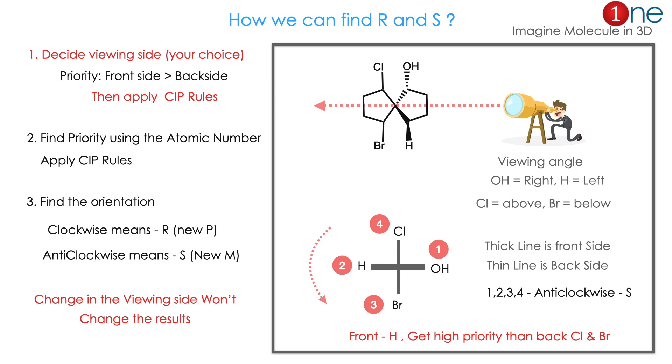Then you have to apply the CIP rule. You go by atomic number for CIP rule, then you have to arrange it. If you find the orientation clockwise, it means it's R. Anticlockwise means it is S. The new way is P and M, old way is R and S. Changing the viewing angle won't change the results.